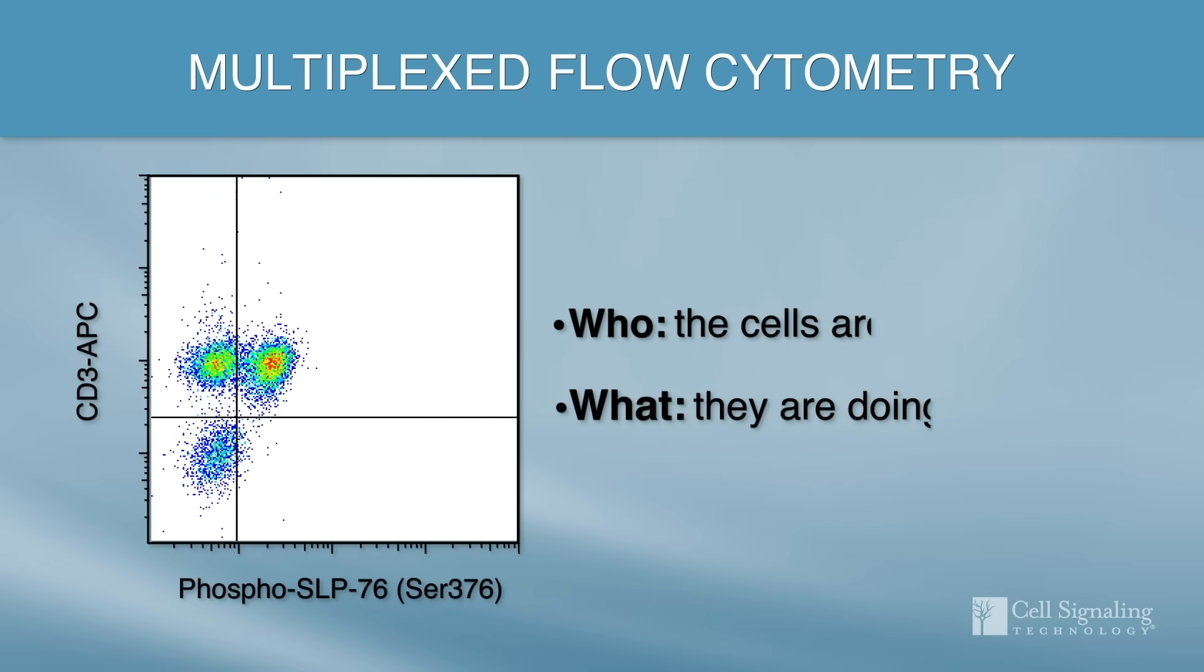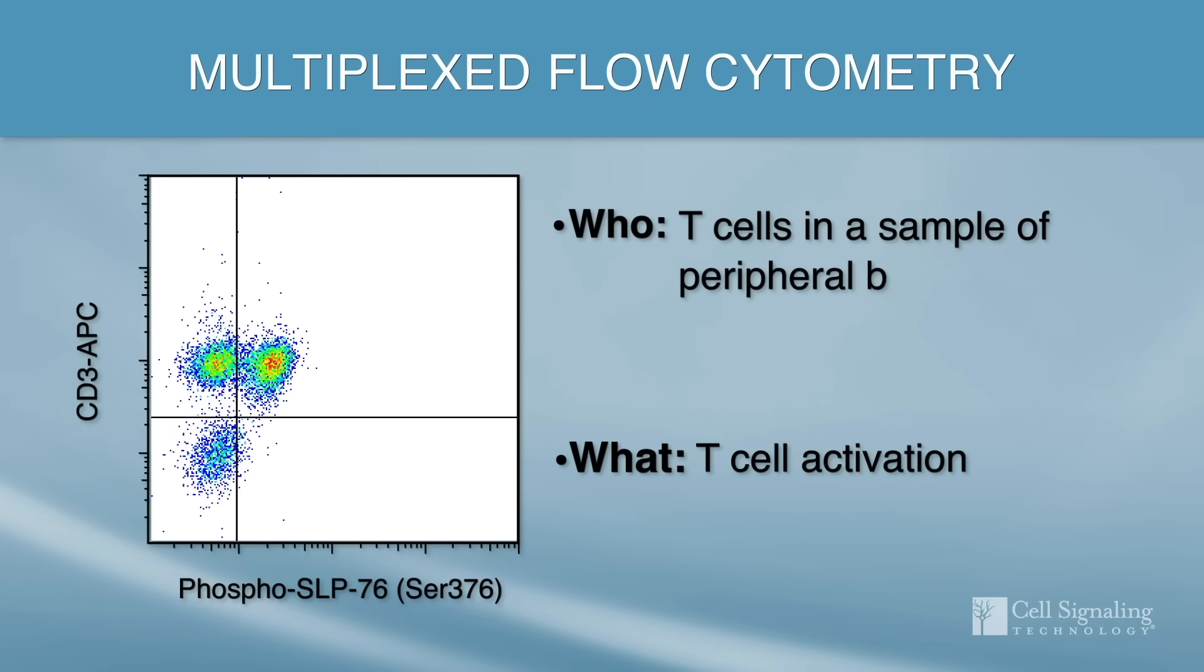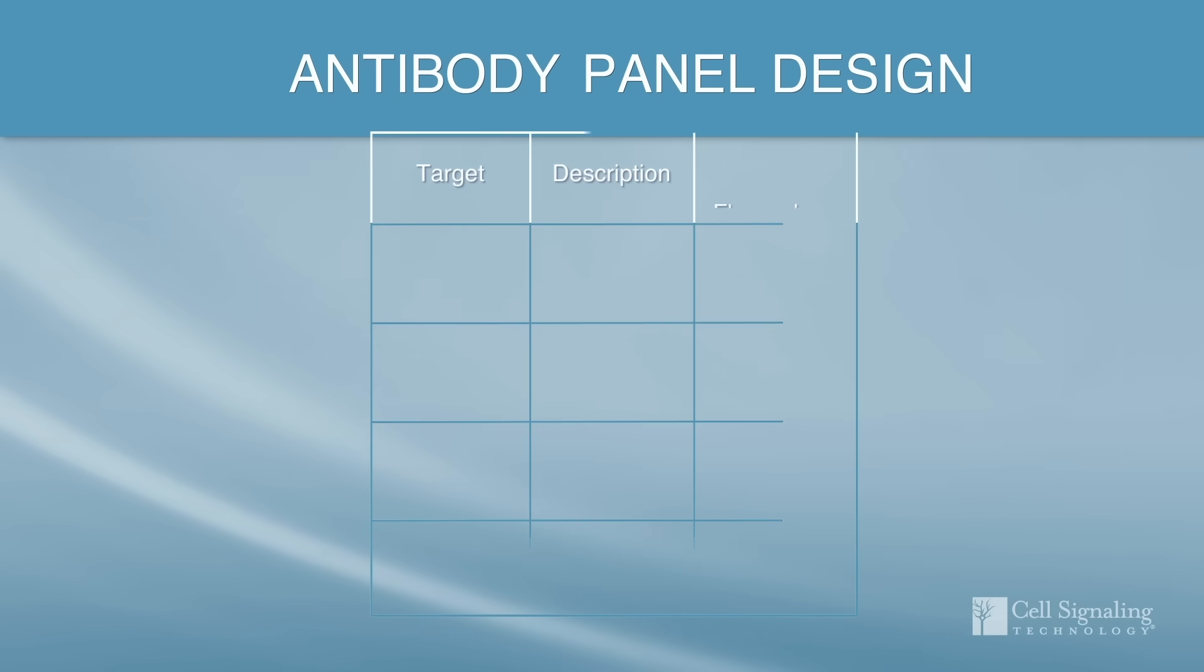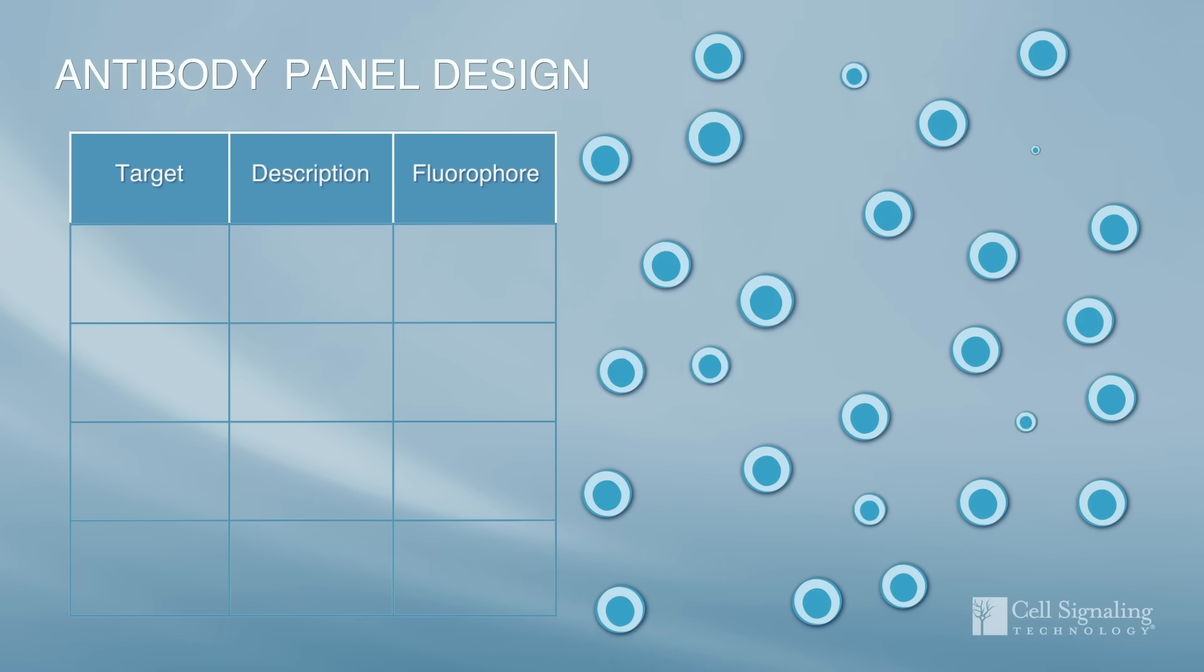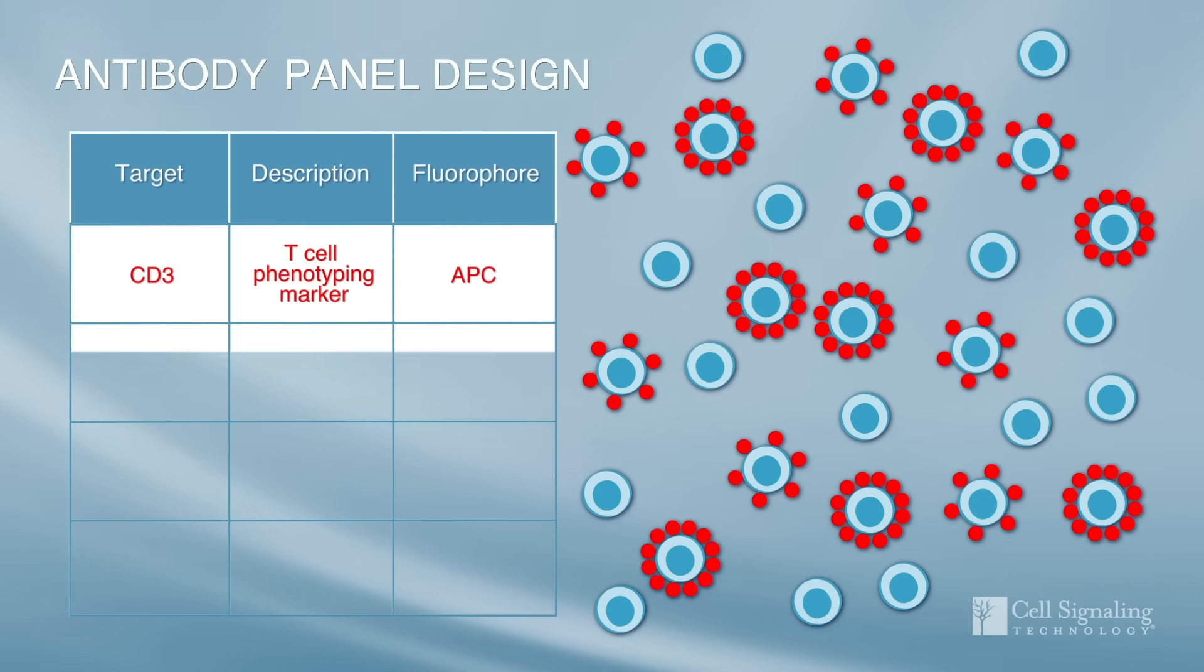In our example experiment our goal is to assess activation of T cell lymphocytes within a heterogeneous PBMC sample. Start building your panel by selecting appropriate surface markers so that you can gate populations and subpopulations in your analysis. In our example we use CD3 as a pan T cell marker and CD4 as a helper T cell marker.